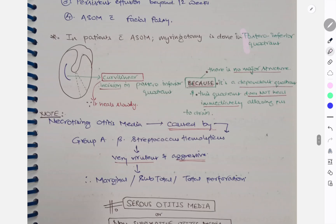In patients with ASOM, myringotomy is done in the postero-inferior quadrant. Why is it done in the posterior quadrant? Because there is no major structure behind it. It is a dependent quadrant and the quadrant does not heal immediately. Therefore, allowing the pus to drain, the incision is curvilinear and incision is put in the posterior quadrant since it heals slowly. So it was all about ASOM.